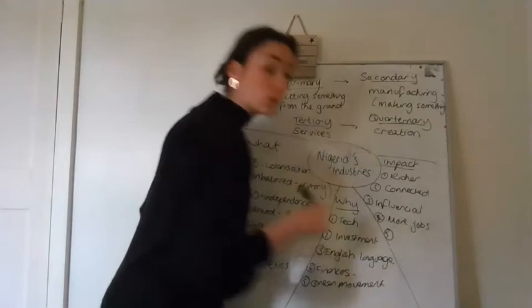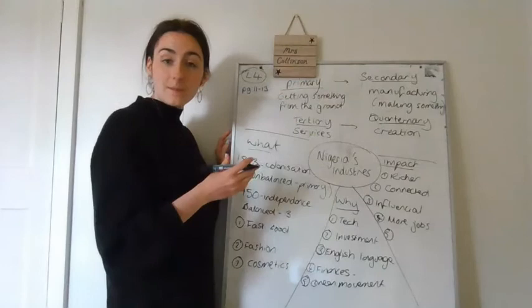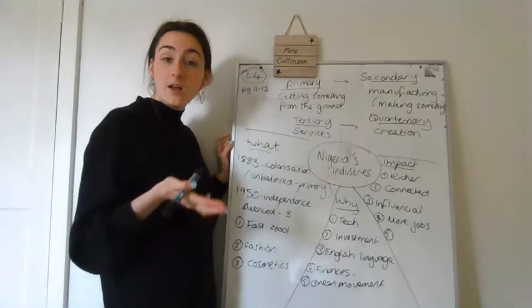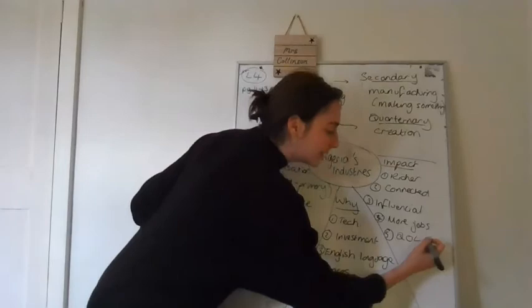And if you've got more people being employed, if you've got more money, and something we're going to look at in a few lessons time is you've got a better quality of life. And what I mean by that is you can have better houses, better food, education, maybe you live longer, things like that. So your quality of life, I'm just going to put QOL, gets better, better quality of life.